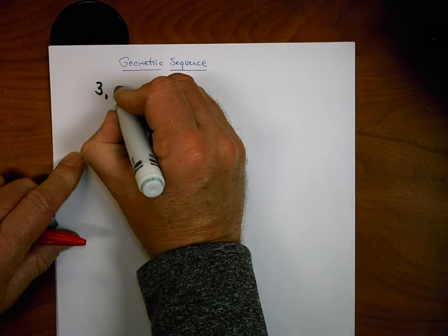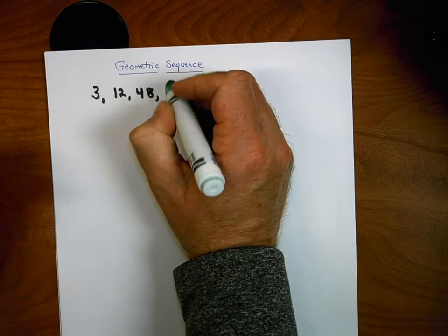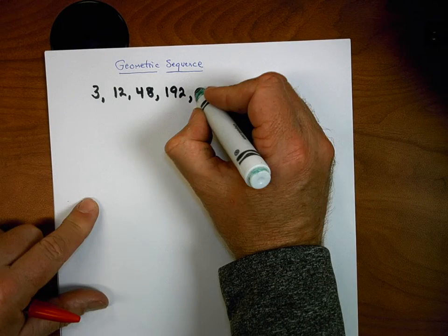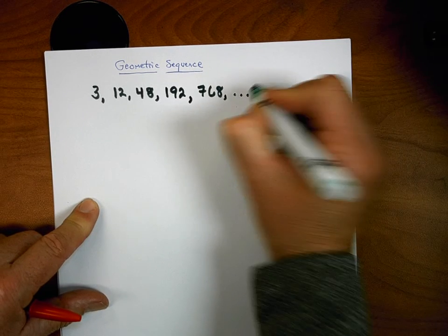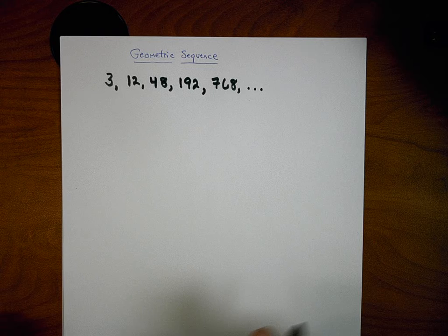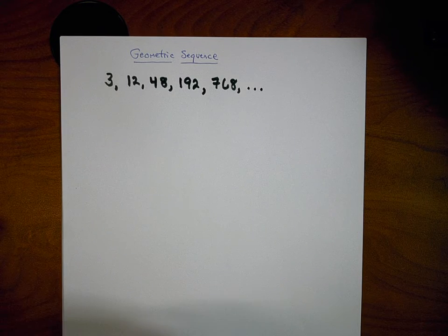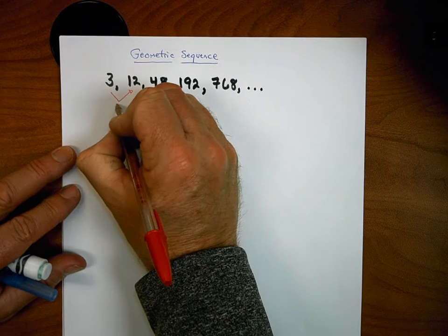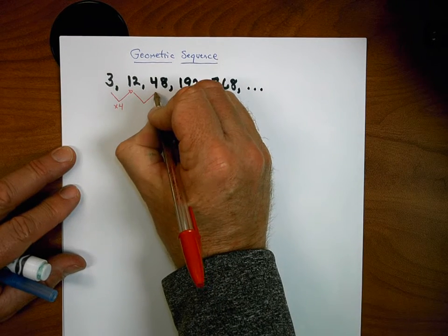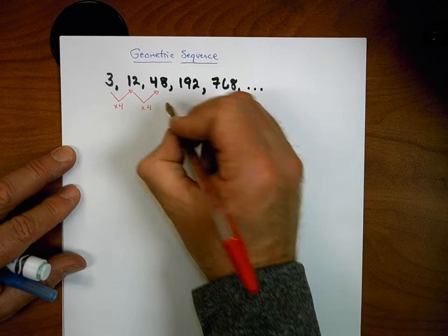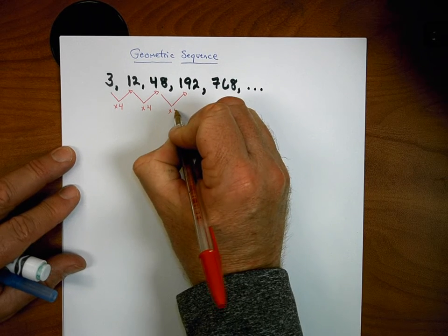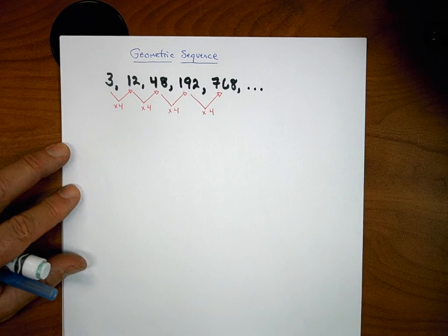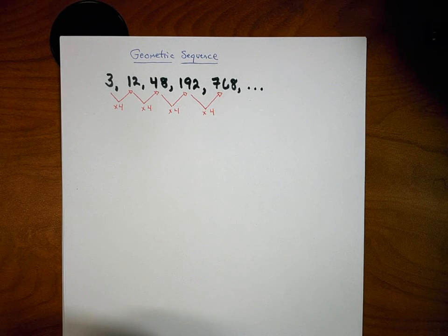I'm going to write down this sequence: 3, 12, 48, 192, 768 — dot dot dot, meaning it keeps going. Soup Chain, what is the sequence being created by? You're right — good job. You're multiplying by 4. So 3 × 4 = 12, 12 × 4 = 48, 48 × 4 = 192, and 192 × 4 = 768.